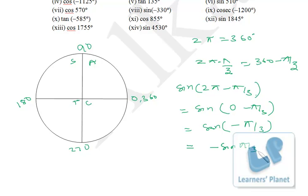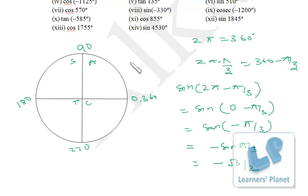Now what is π/3? That is 180/3, so it's sine 60°. Sine 60° is √3/2. Therefore the value of sin(5π/3) is minus √3/2.